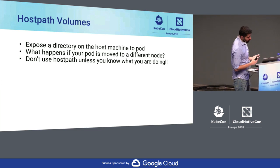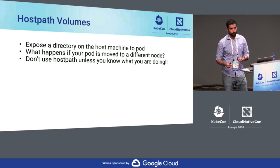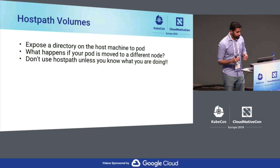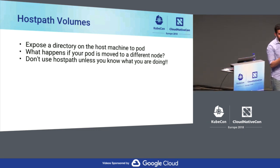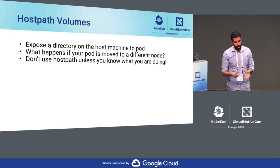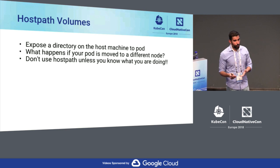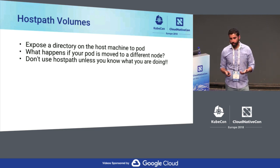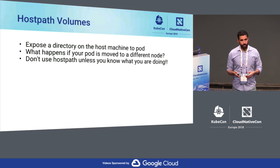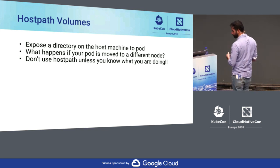Host path volumes expose a directory on the host machine directly into the pod. But there are problems: if your workload is killed and moved to a different node, the data changes underneath the application. Our recommendation is not to use host path unless you have a very specific need and understand what you're doing. Some people use host paths with node affinity to pin a pod to a specific node, but think twice before doing so.